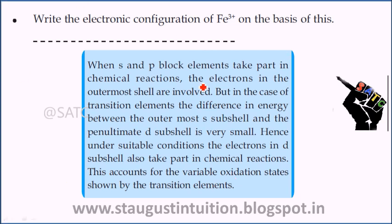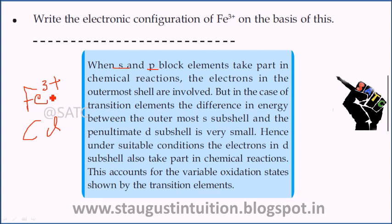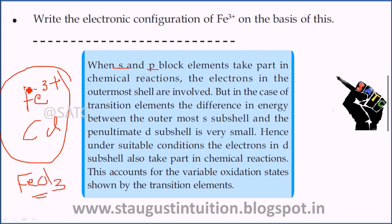So if we consider S and P block elements, we find the outermost shell electrons in chemical reactions. For Fe, Fe3+ reacts with chlorine to form FeCl3, and Fe2+ reacts with chlorine in P block elements to form FeCl2. Fe showing Fe2+ is a D-block element, and Fe3+ reacts with chlorine. The reaction produces FeCl3 as the component. Fe3+ as a D-block element shows variable oxidation states.